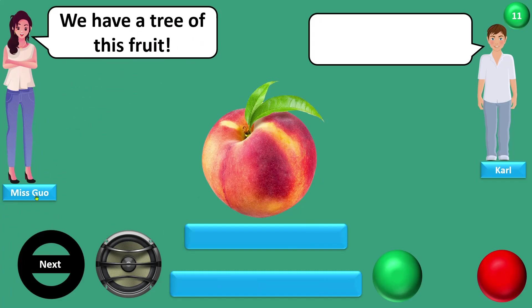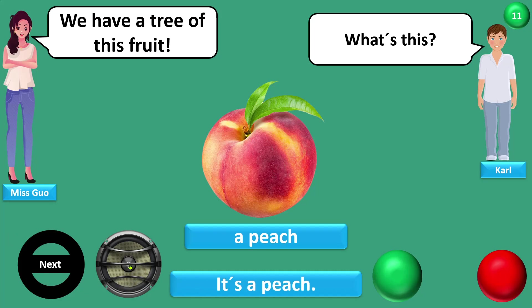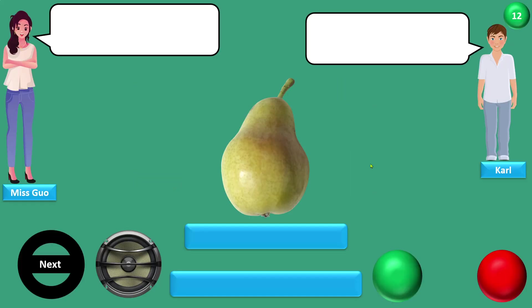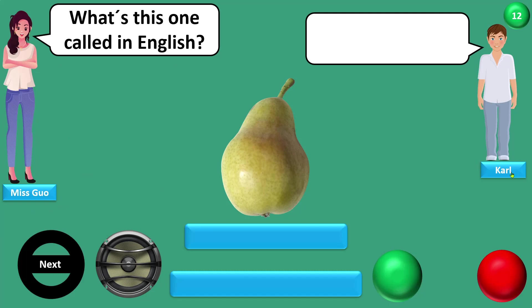We have a tree of this fruit. What's this? A peach. It's a peach. What's this one called in English? Sorry, I forgot. A pear. It's a pear.